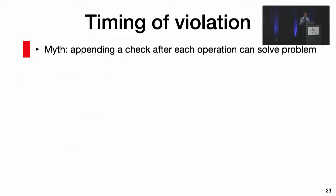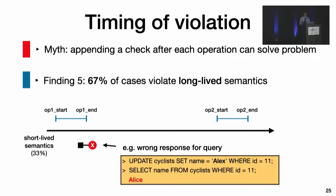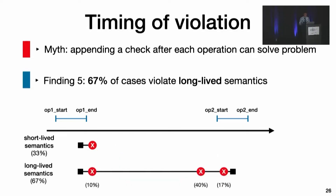Another direction to address silent semantic violations is to dynamically detect them. A simple idea is appending a check after each operation, such as deleting a file and immediately listing the parent directory to see if the file still exists. However, it turns out there are two types of semantics: short-lived and long-lived. Short-lived means some semantics only exist during the execution of the associated operation, like a read operation should return the latest data. Long-lived semantics exist even after the associated operation finishes. 67% of failures violate long-lived semantics.